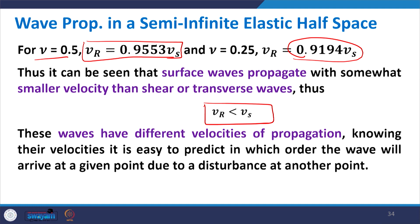These waves — compression (P), shear (S), and Rayleigh — have different velocities of propagation, and knowing their velocities, it is easy to predict the order in which they will arrive. This concludes today's lecture on wave propagation. We will continue in the second lecture on this topic. Thank you very much for your kind attention.